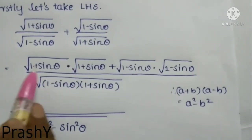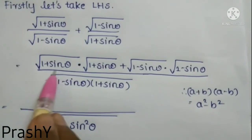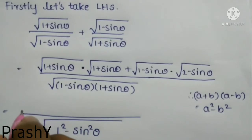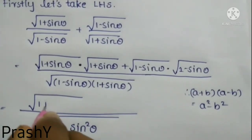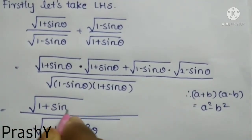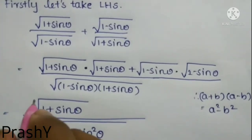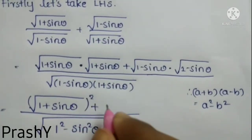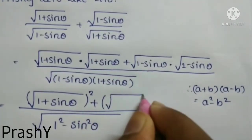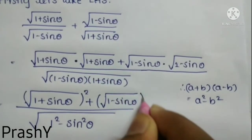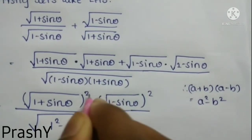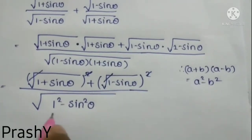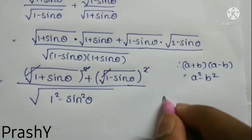We observe that these two values are the same. So root over (1 + sin θ) into root over (1 + sin θ) gives root over (1 + sin θ) whole square, and similarly for (1 − sin θ). The square and square root cancel. In the denominator we have 1² − sin² θ.